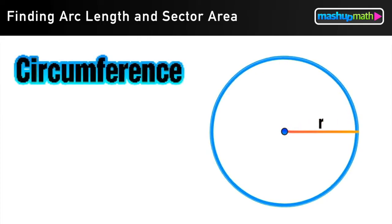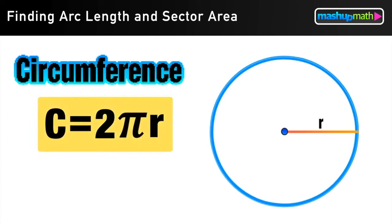And we know that the length of the outside of any circle is called its circumference, which in any circle is equal to 2 pi times the length of the circle's radius.